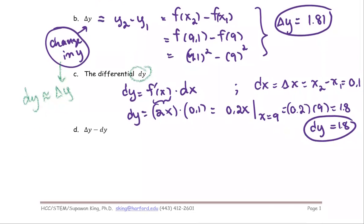Part D: we find the difference between delta y and dy. From part B, delta y equals 1.81. From part C, dy equals 1.8. The difference is 0.01.